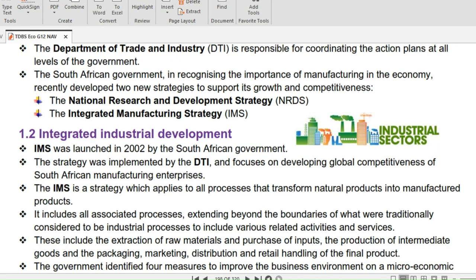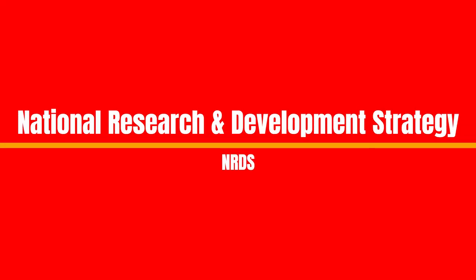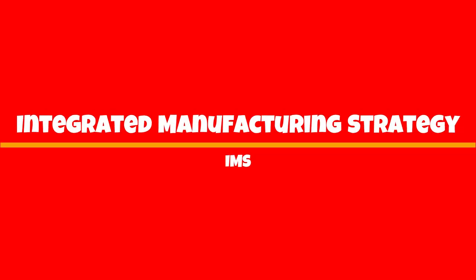The South African government, in recognizing the importance of manufacturing in the economy, recently developed two new strategies to support its growth and competitiveness. The strategies developed are the National Research and Development Strategy, NRDS, and the Integrated Manufacturing Strategy, IMS.